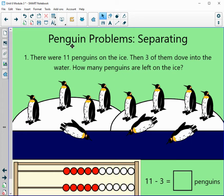The first problem, penguin problem separating. There are 11 penguins on the ice. Then three of them dove into the water. How many penguins are left on the ice?